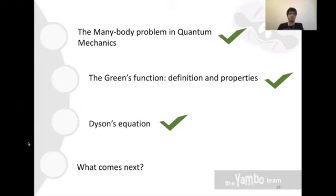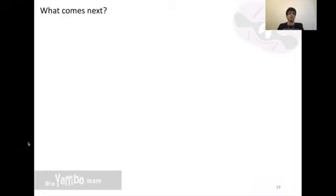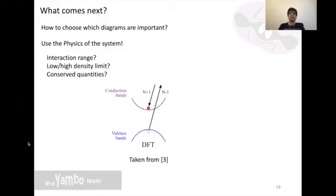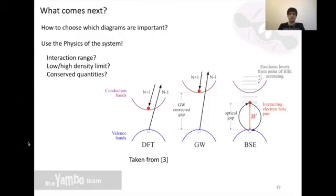So now that we have seen how to compute the Green's function, what comes next? Well, this is going to be the topic of the next lessons. You'll see discussions on which diagram to choose depending on the system and the property that you wish to study. And since the school is focused on optical properties, you'll start by seeing how to correct the bandgap from DFT by introducing quasi-particle corrections to the energy levels. And then you'll see that even these corrections aren't enough for you to obtain the correct optical spectra. And so you need to introduce the interaction between electrons and the holes to compute optical absorption.